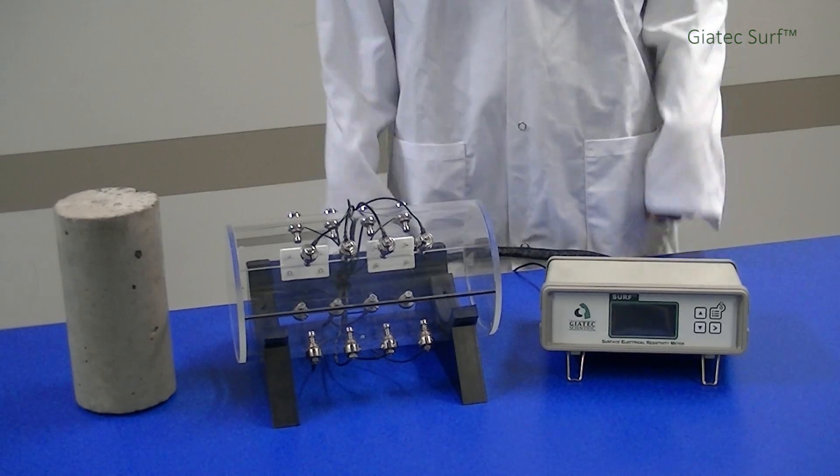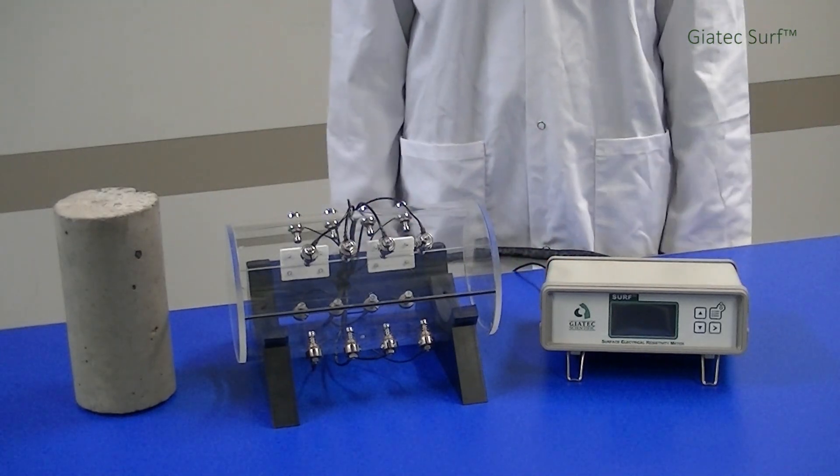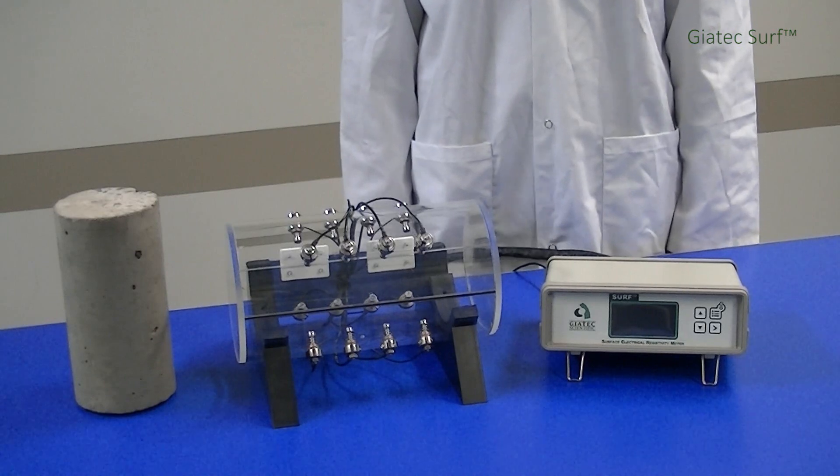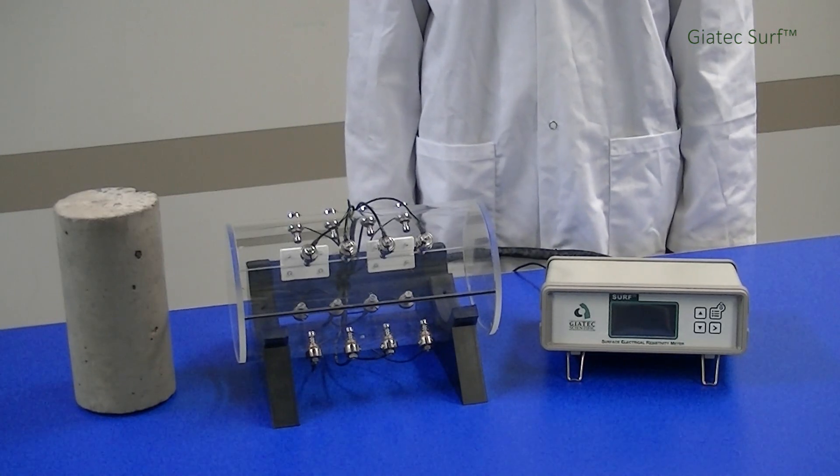SURF has two main components, a test apparatus and a measuring device. SURF can adapt both ASTM and AASHTO's standard test procedures. It can also be used for a customized four-point electrical resistivity measuring device.